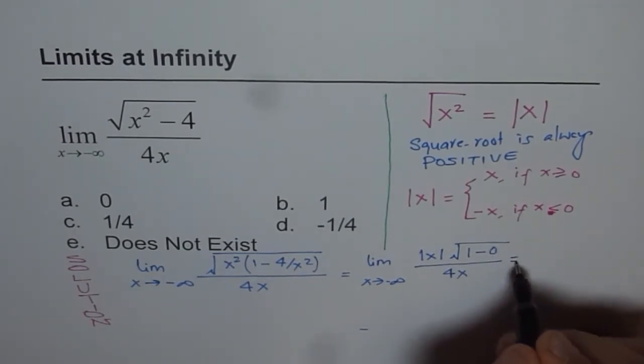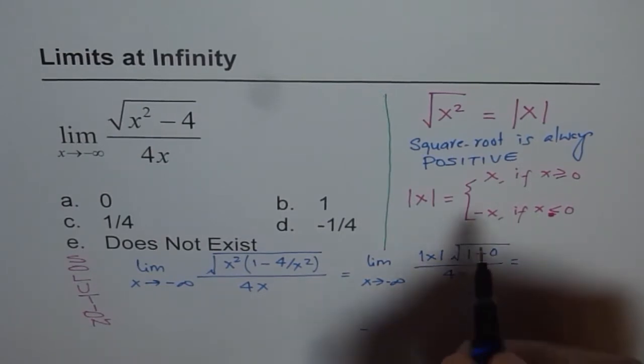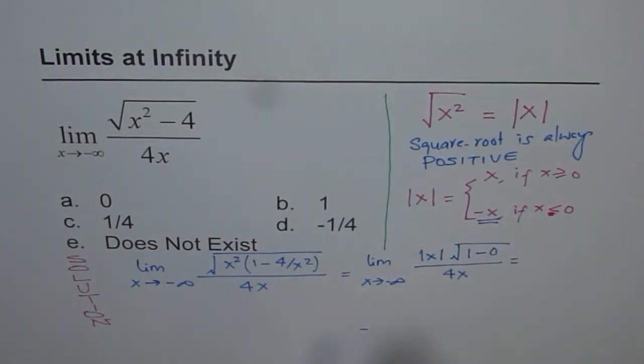Now this equals, if x is approaching minus infinity, then what is absolute x? Absolute x is minus x, do you see that? So this is the value which we have to come, since we are approaching minus infinity.